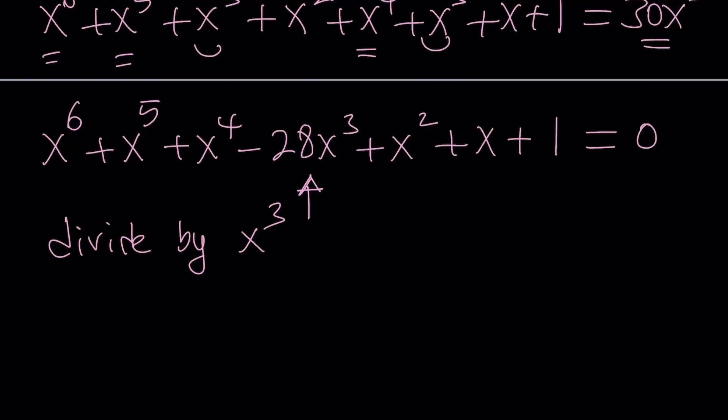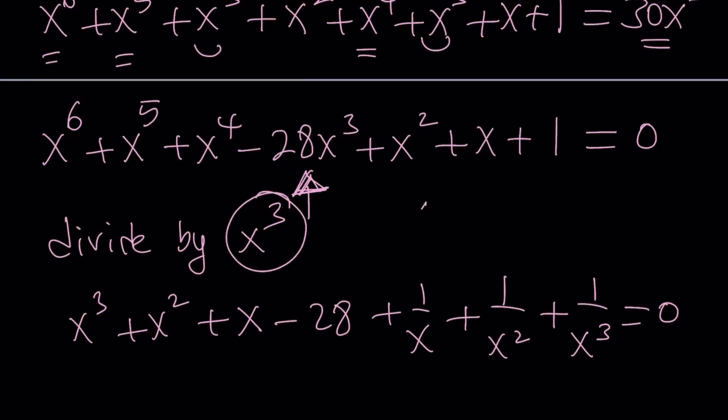And then obviously, we're going to do this and use substitution. If you divide x to the 6 by that, you're going to get x cubed. And then you're going to get x squared. And then you're going to get x. If you divide this by x cubed, you're going to get minus 28. And then x squared divided by x cubed is going to be 1 over x. And then you're going to get 1 over x squared. And then finally, you're going to get 1 over x cubed. And it's still equal to 0. So we're allowed to divide by x cubed because x does not equal 0. We have to check that first, okay?